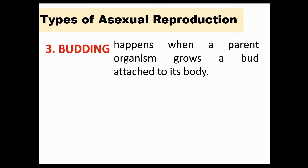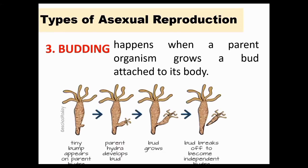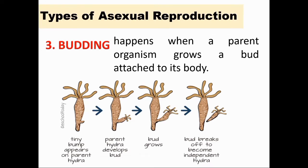The third type is budding. Budding happens when a parent organism grows a bud attached to its body. When the bud is developed, it will detach itself from the parent and form a new organism. An example of organisms that use budding as a mode of asexual reproduction includes single-celled yeast and multicellular eukaryotes such as hydra and corals. As shown in the diagram, tiny bumps appear on the parent hydra, and the parent hydra develops buds. The bud grows and then breaks off to become an independent hydra and makes a new organism.